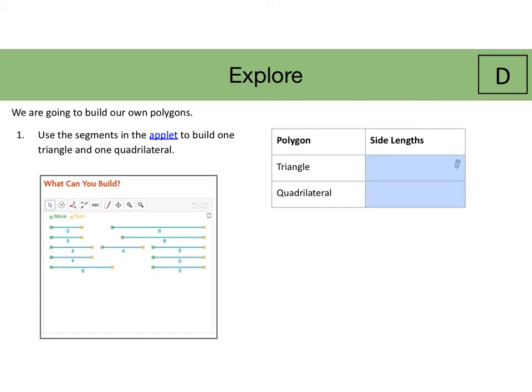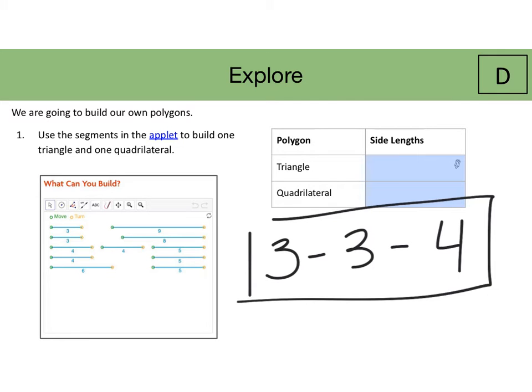After you demonstrate for students how to build polygons in the applet, you're going to let students go ahead and let them build their own polygons. Again, we've already done a three by three by four, and so you can show students your example that way they don't repeat it.